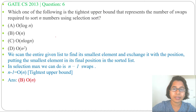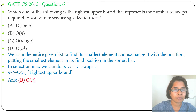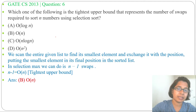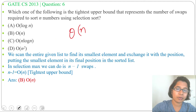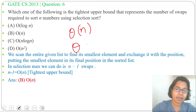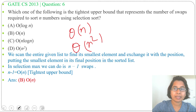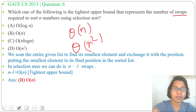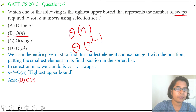So the answer is option B, since O(n) is the tightest upper bound for n minus one. For selection sort, the number of swaps is Θ(n) or O(n), while the running time is Θ(n²). Since the question asks about number of swaps, the answer is O(n).